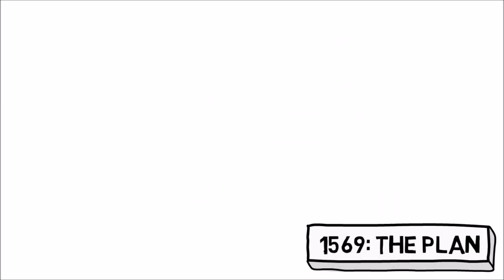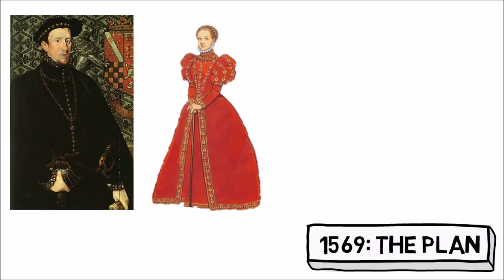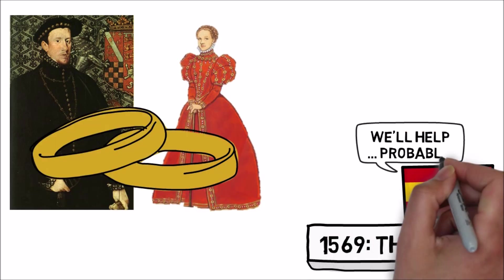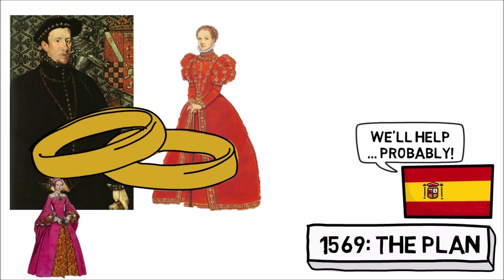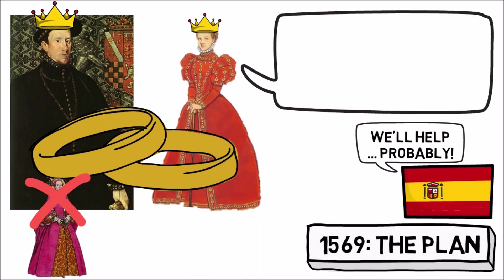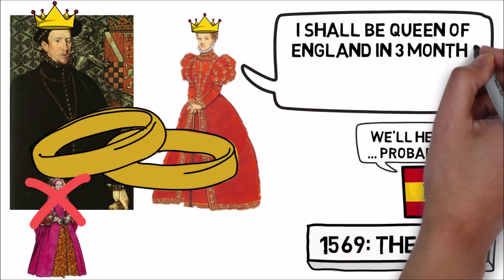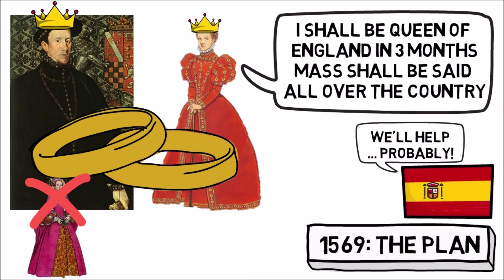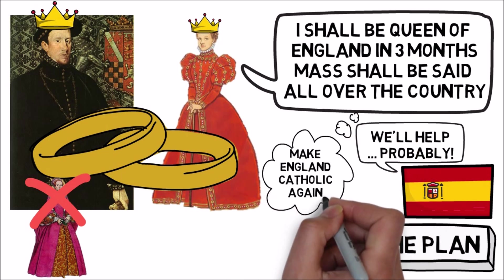In 1569 they come up with a plan: the Duke of Norfolk is going to marry Mary Queen of Scots with support from Spain. The idea is that Mary Queen of Scots will depose Elizabeth and become Queen, with the Duke of Norfolk as her consort. Mary is so convinced this plan will work that she tells the Spanish ambassador in 1569, 'I shall be Queen of England in three months. Mass will be said all over the country' — clearly signalling her intention to convert the country back to Catholicism.